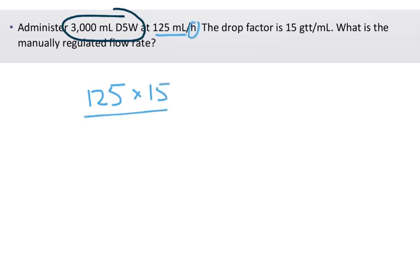And again, for this one, we have minutes. And this time our minute says hour. So that's just a 60. Calculator, 125 times 15 equals, divided by 60 equals, and I have 31.25. So when we round to a whole number, we should get 31 GTT per minute. So that should help you out with GTTs per minute.